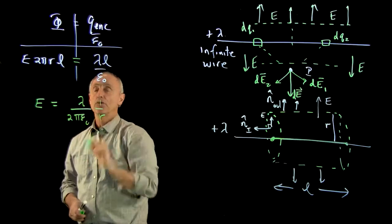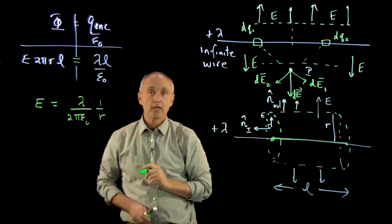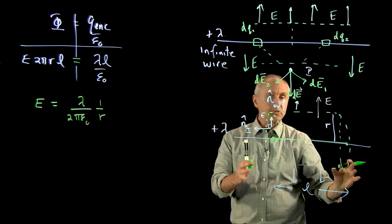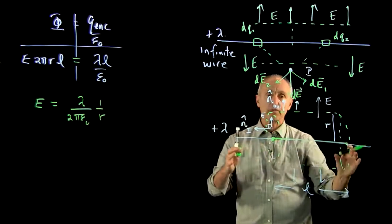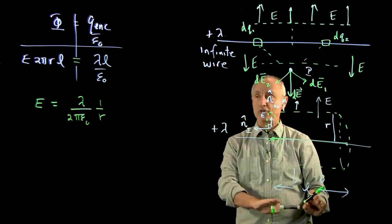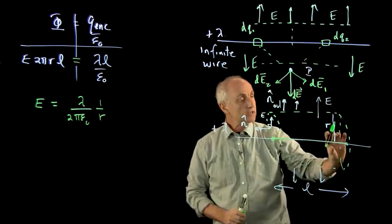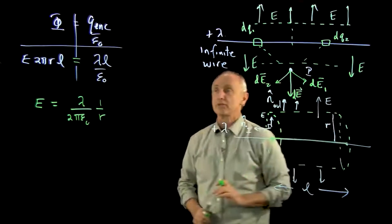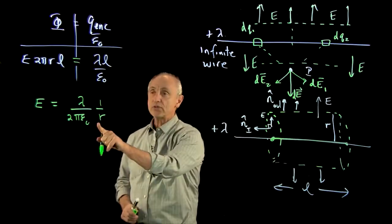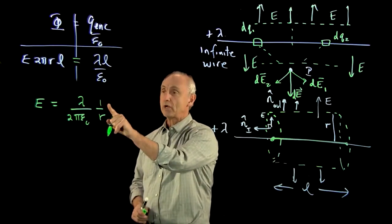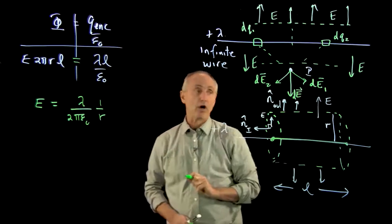And I'll separate out the 1 over R part. So it makes sense that because of the infinite length of the wire, that our answer shouldn't depend on how long the Gaussian surface is. But it does make sense that it will depend on the parameter R. And notice, unlike a point charge, the field of a wire drops off like 1 over R.